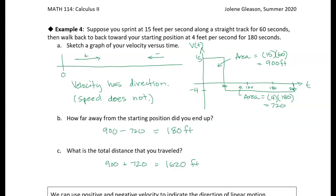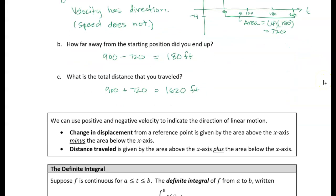Okay? So this problem is illustrating the difference between position or displacement is oftentimes what it's called, versus the total distance. And so you have to be careful about what the problem you're dealing with is asking for. So the point is that we can use the positive and negative velocity to indicate the direction of linear motion. And the change in displacement or the change in position from a reference point is given by the area above the x-axis minus the area below the x-axis. So essentially what we're doing is treating this area below the x-axis as negative area. So we could just treat this as negative, negative 720. And the distance traveled then is given by the area above the x-axis plus the area below the x-axis. So in that case where it's almost like we're taking the absolute value of the areas and adding them.